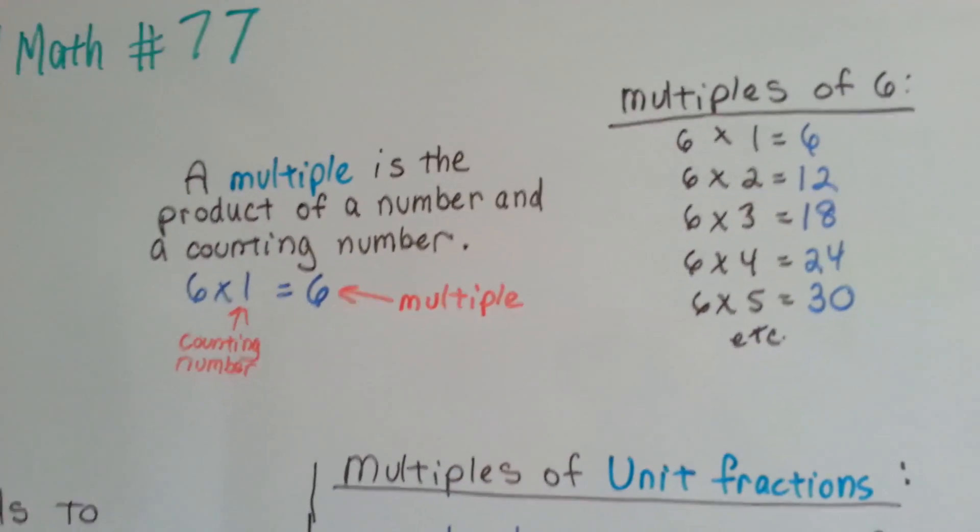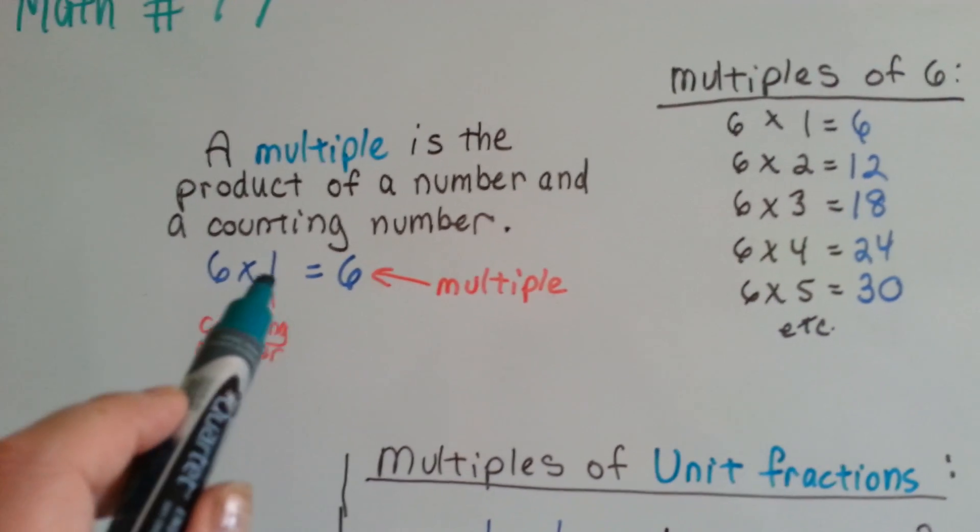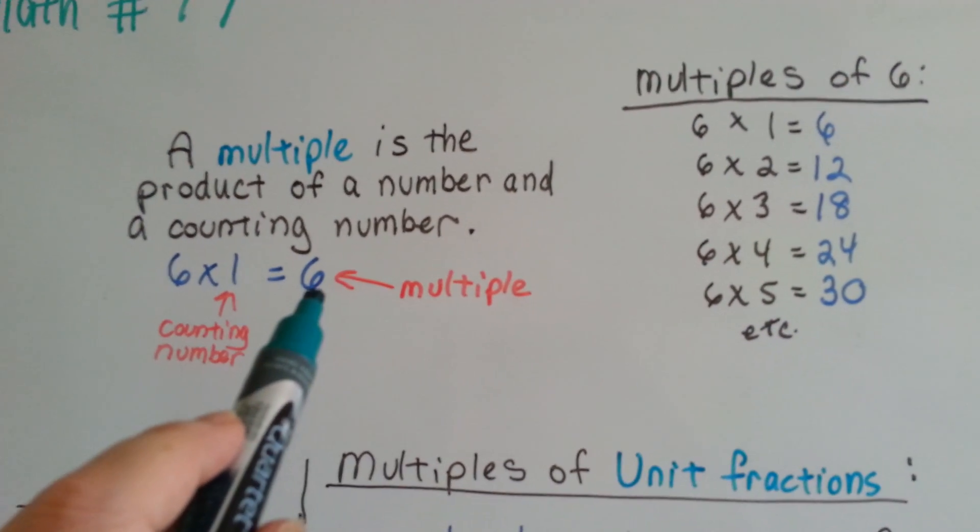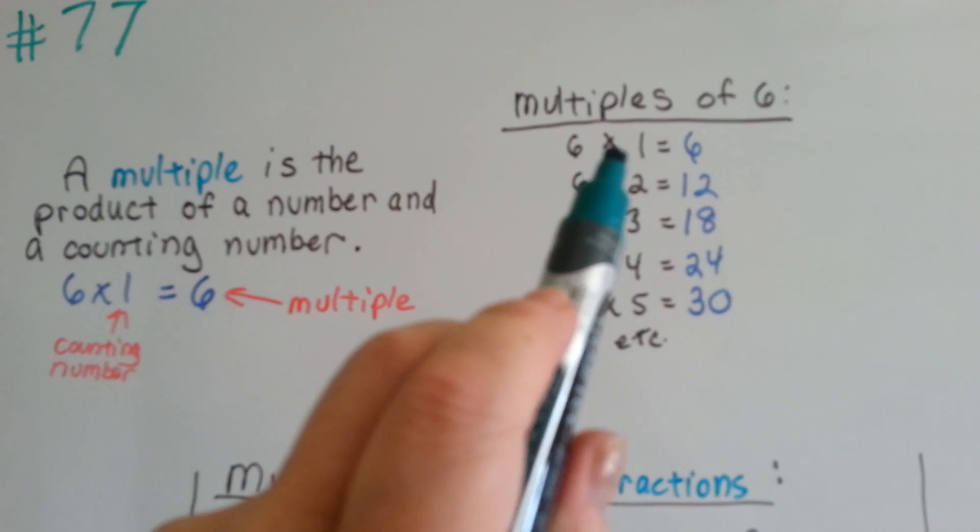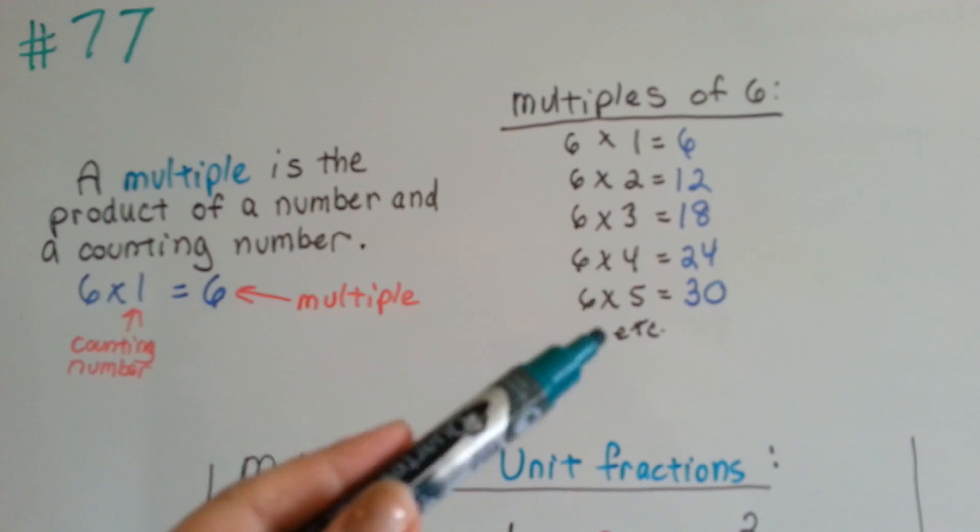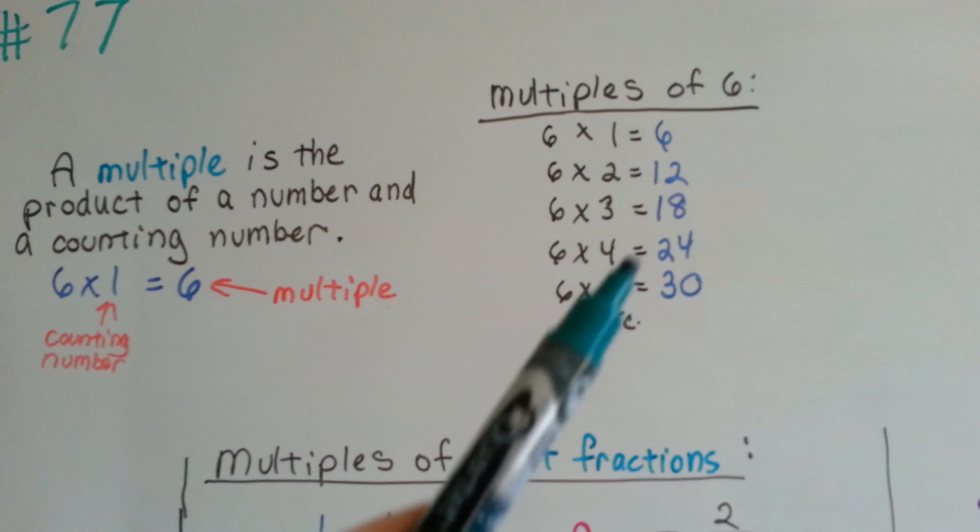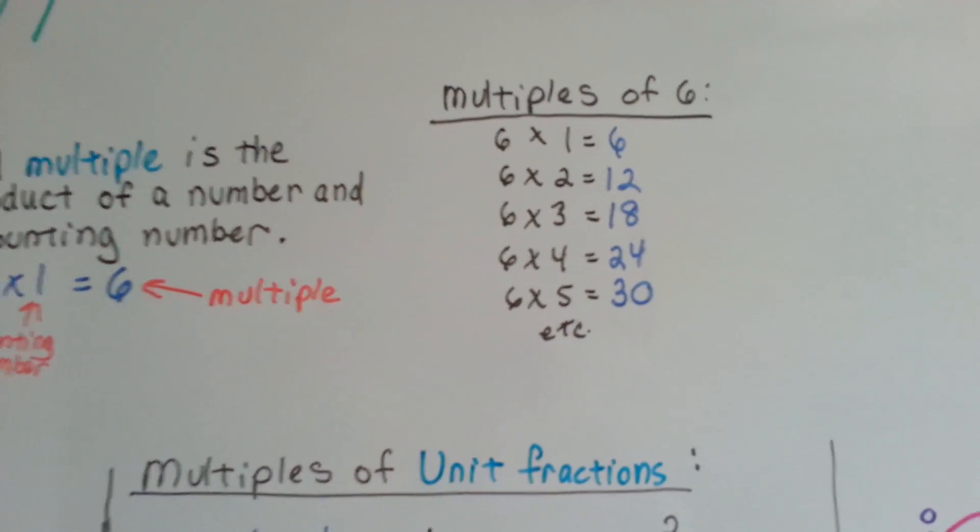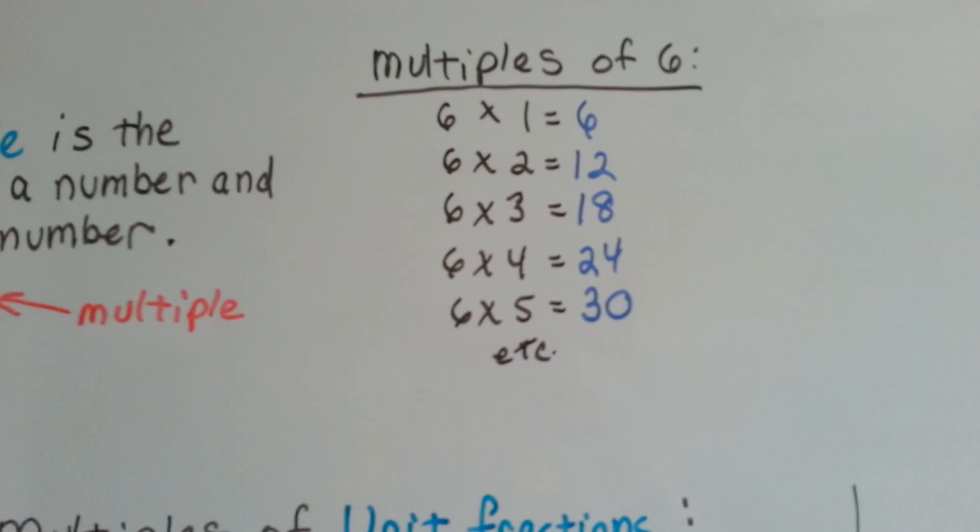A multiple, if you remember, is the product of a number and a counting number. The counting number would be 1, so the multiple is 6. Here are the multiples of 6. This counting number is 2, 3, 4, 5, 6. See, they're slowly going up as counting numbers. Then the multiples are 6, 12, 18, 24, and 30. They're each going up by the number 6 for each one. They're increasing.